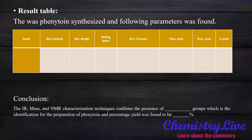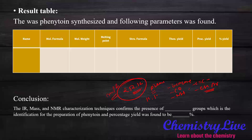Last but not least, we look at the results table. All data from the experimental procedure should be recorded. From the IR, the compound has C=O and N-H groups, a benzene ring, and aromatic C-H. The mass spectrum shows m/z of 252.12, suggesting the phenytoin ring is present. From NMR, the proton at δ 11.10 is near two carbonyl groups and another N-H near the benzene ring, confirming C=O and N-H functional groups. After calculating practical and theoretical yield, the percentage yield is recorded.